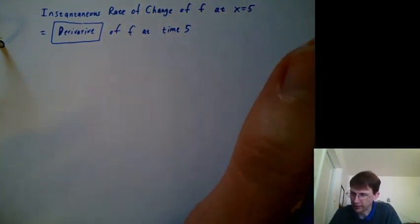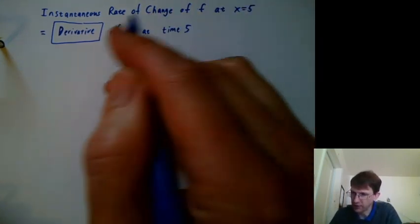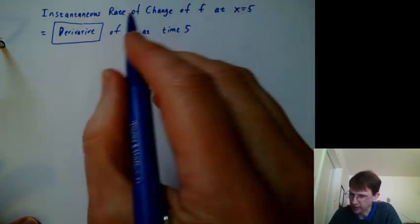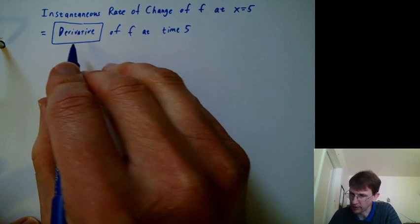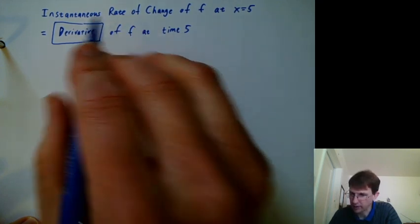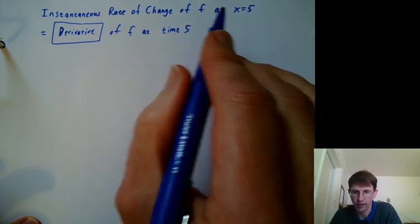Now that we've seen the Excel version and the Desmos version of playing with the rate of change as the time span gets smaller and smaller, let's talk about a big new vocabulary definition called the derivative of f at time 5. f is a function. That's the instantaneous rate of change of f at time 5.